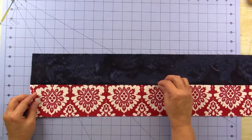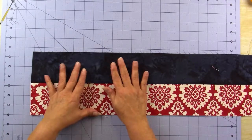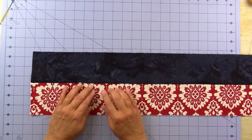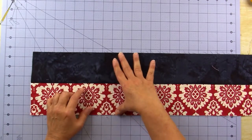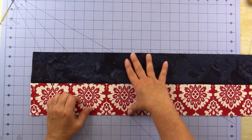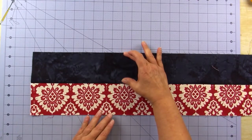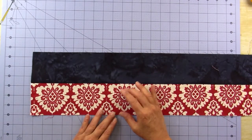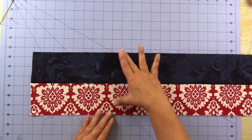Here are the strips I just sewed together and I pressed them toward the dark. The next thing you need to do is check to make sure that this is an accurate size. We cut these both at three and a half inches, so if I took the three and a half inches plus the three and a half inches and then took out half an inch for the seam allowance, this should measure six and a half inches.